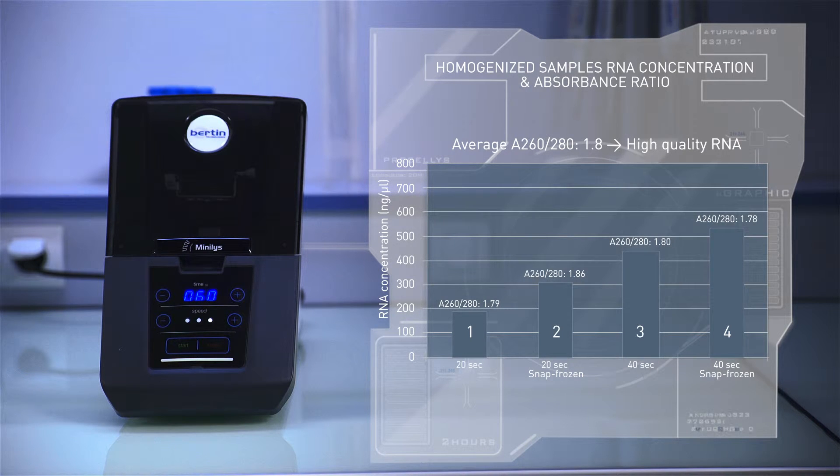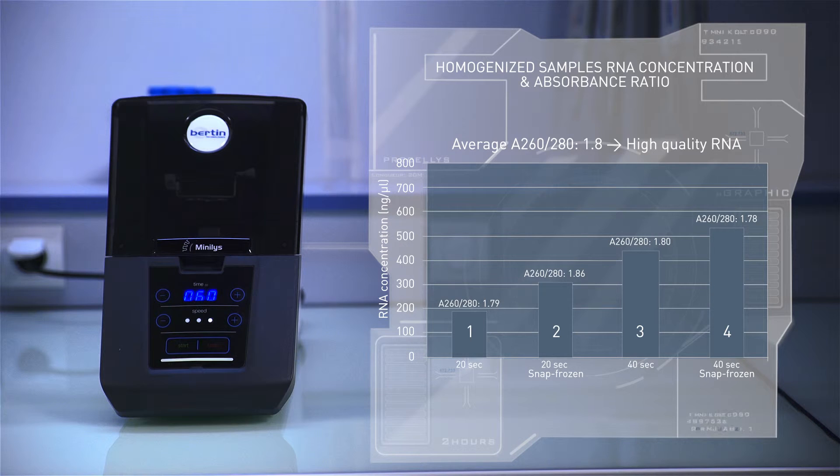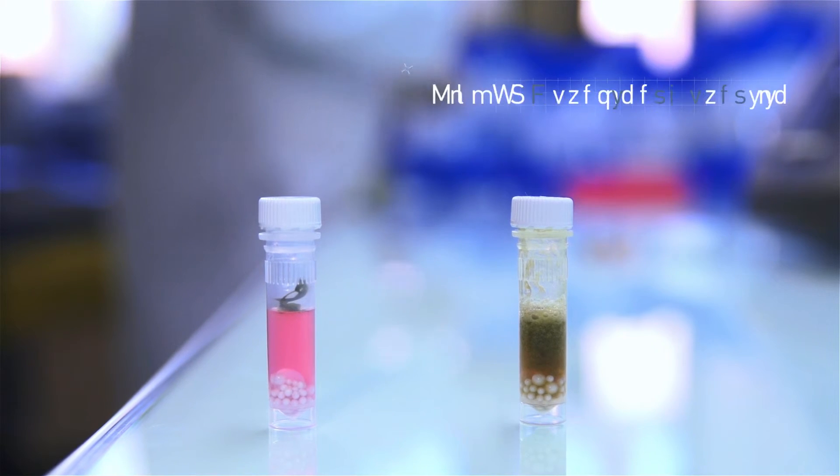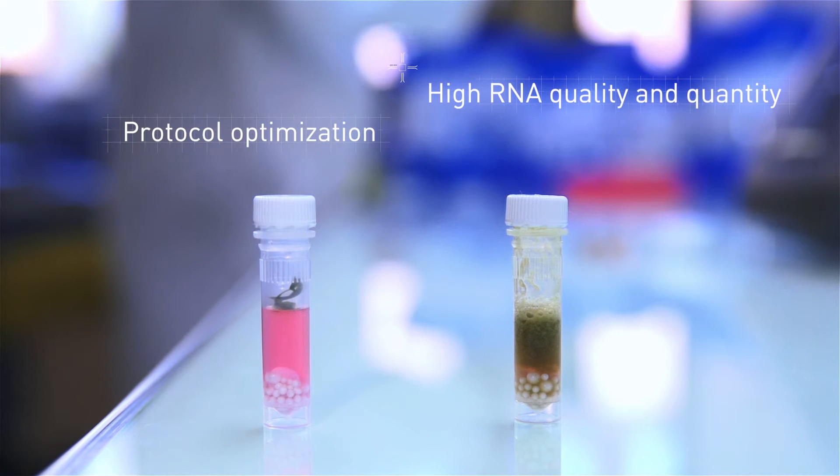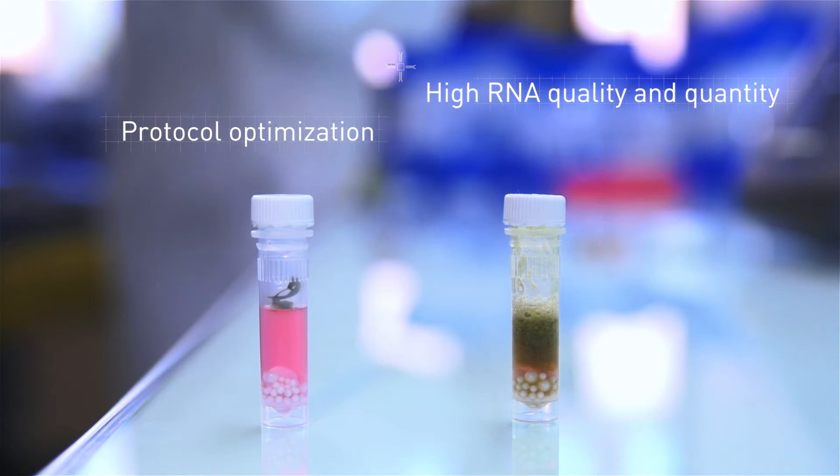After mini list homogenization, the IBMP team observed high RNA concentration and high quality extracted from Arabidopsis samples. In addition, an optimization of the protocol is possible by increasing the time per cycle on the mini list to improve the results.